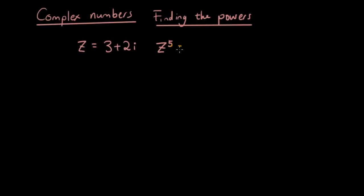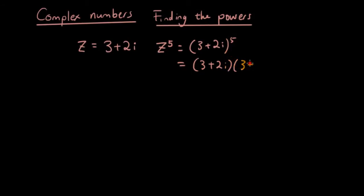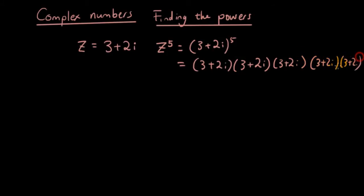Unfortunately with what we know right now about expanding terms, we would have to put 3 plus 2i to the power of 5, and then you're going to have to write out 5 brackets and expand it all out, and it's just going to take too long.